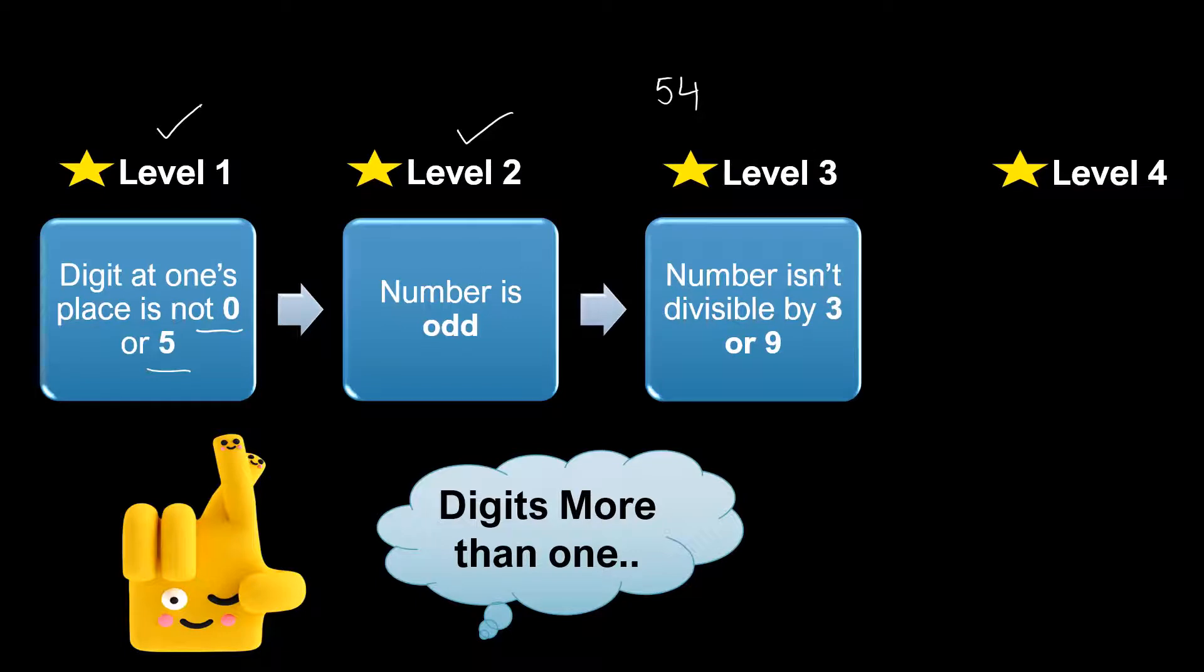Simply add the digits of the number. You'll get 9. Since 9 is divisible by 3 and 9, that means 54 will be divisible by both 3 and 9. But for a prime number, it should not be divisible by 3 or 9. If it passes, it will clear this level and move to the next.